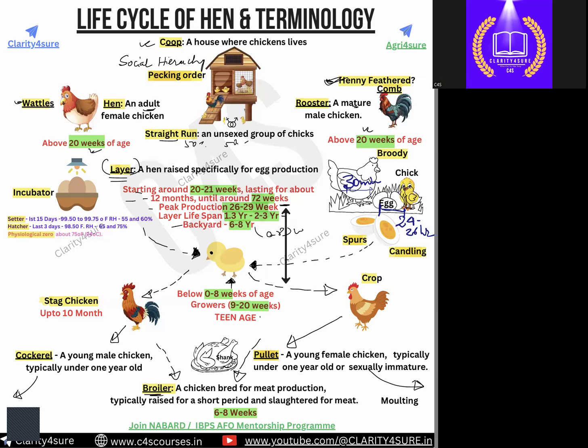A bird that lays the egg and sits around it after mating is called a broody bird. There is approximately a 24 to 26 hour gap between laying one egg and the next. If one egg is laid, another 24 hours gap passes before the next egg is laid. Once the first egg is laid, the formation of the next egg begins inside the bird within just 30 minutes.